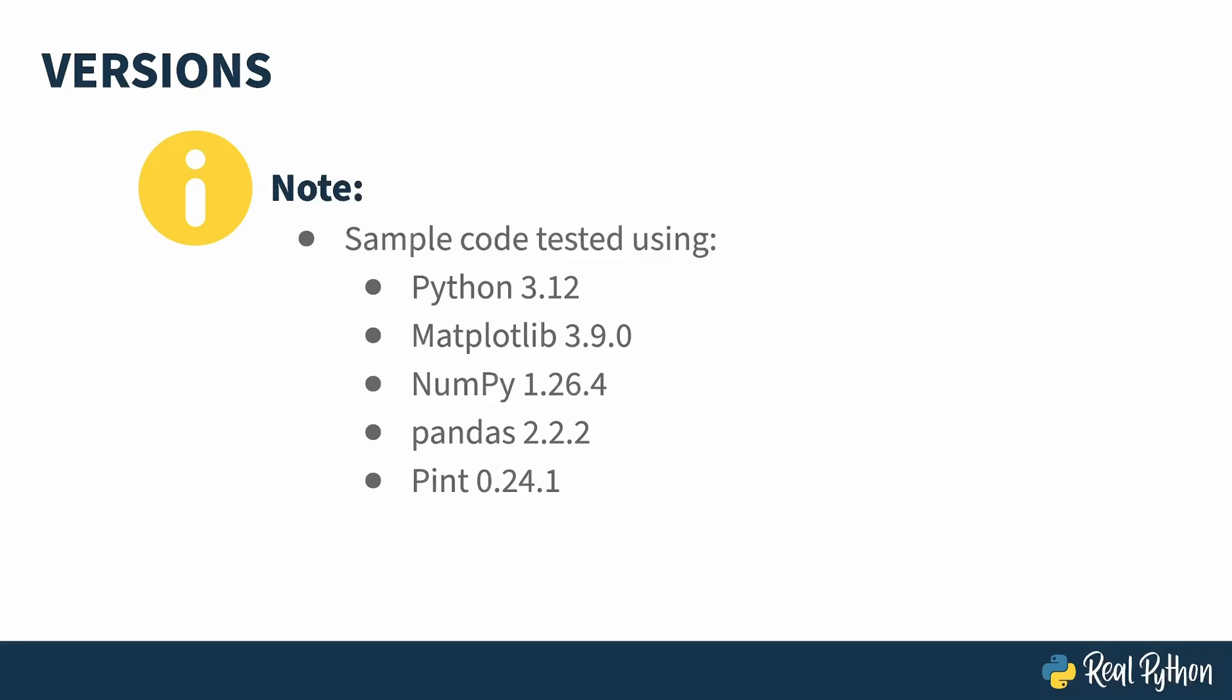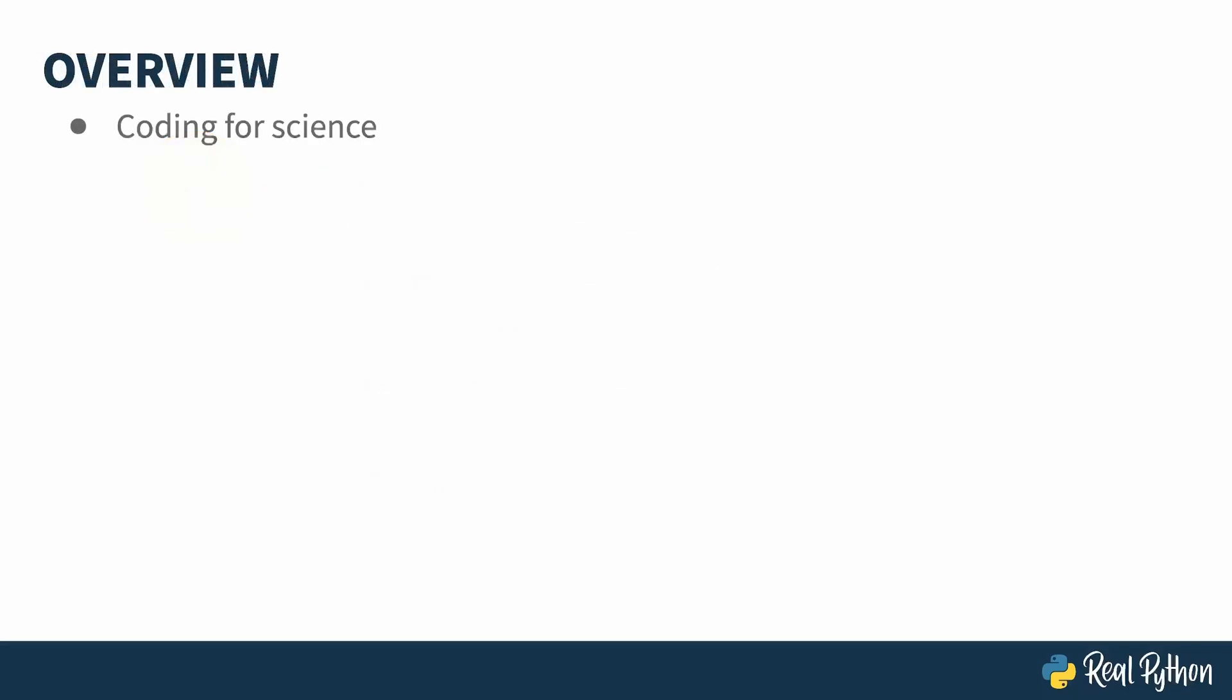By pure lines of code, the vast majority of software out there is for business applications, and that tends to mean web and app development. Coding for science is subtly different. First off, there's more of a focus on the end result. Of course results are important in business as well, but here you're often writing software that you might not reuse. Once you've crunched the numbers, once you've caught the result you're looking for, you might not do it again.